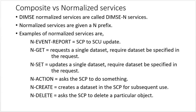DIMSE normalized services are called DIMSE N-services. Normalized services are given an N prefix. Examples of normalized services are: N-EVENT-REPORT — an SCP-to-SCU update on something happening in the transaction; N-GET — request a single data set, with the required data set specified in the request; N-SET — update a single data set; N-ACTION — ask the SCP to do something; N-CREATE — creates a data set in the SCP for subsequent use; and N-DELETE — ask the SCP to delete a particular object.